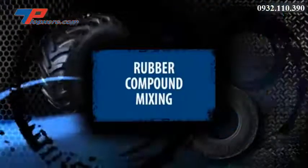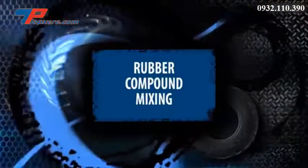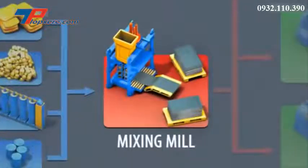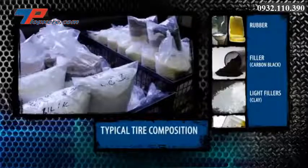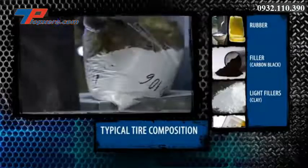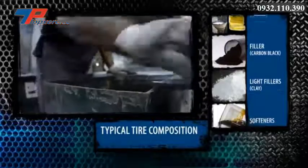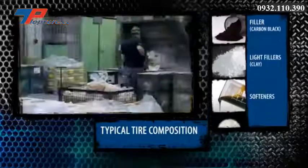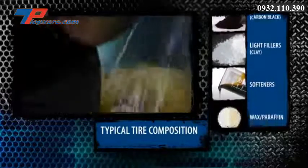The first stage of tire production is rubber compound mixing. At the rubber mill, the rubber is mixed with various materials. These include fillers, clay, and carbon black.